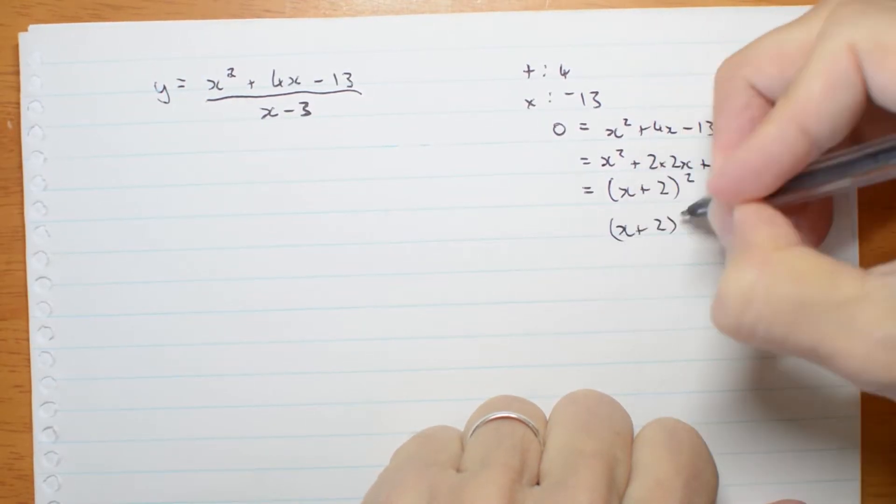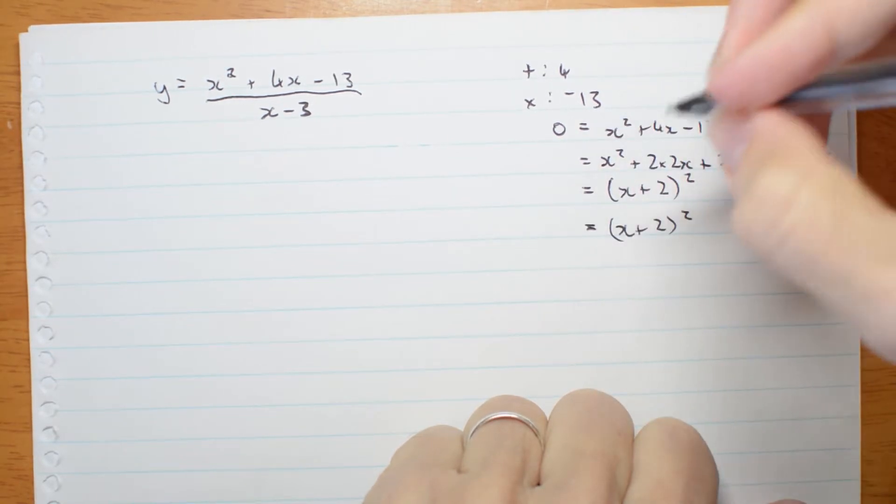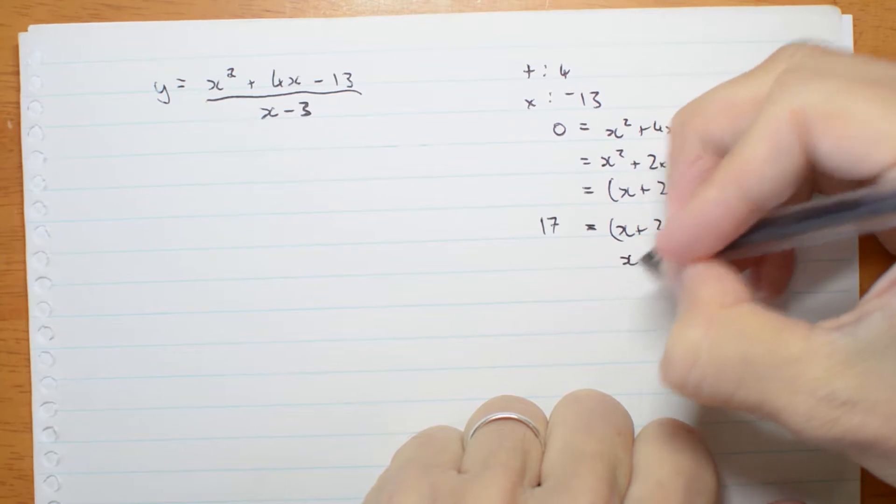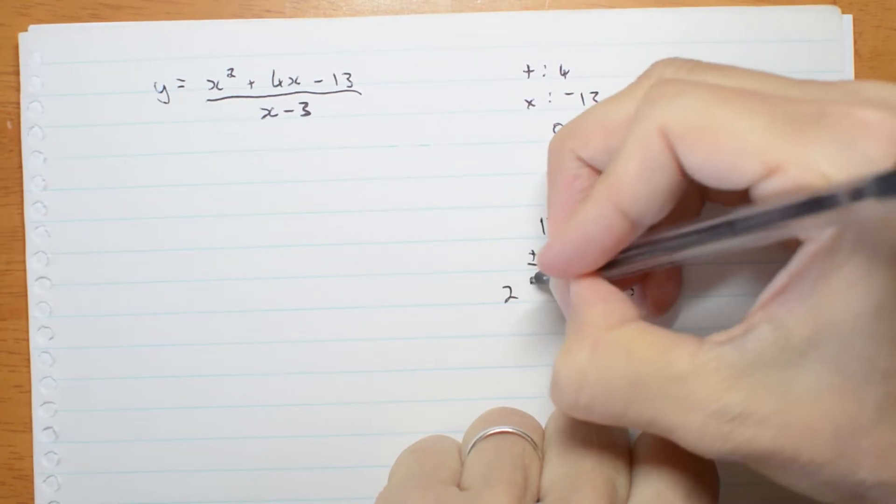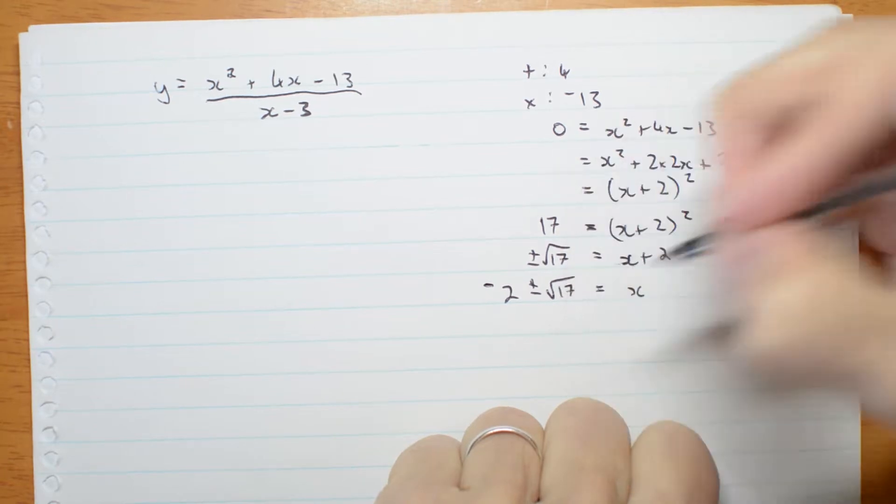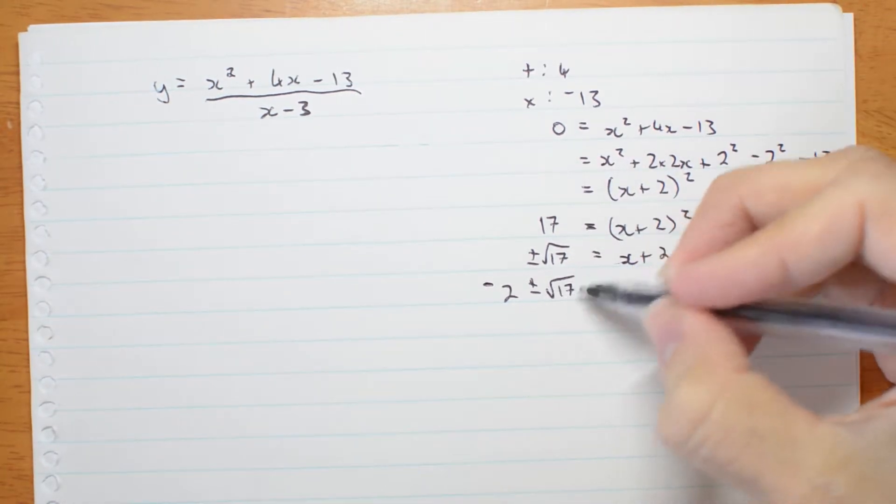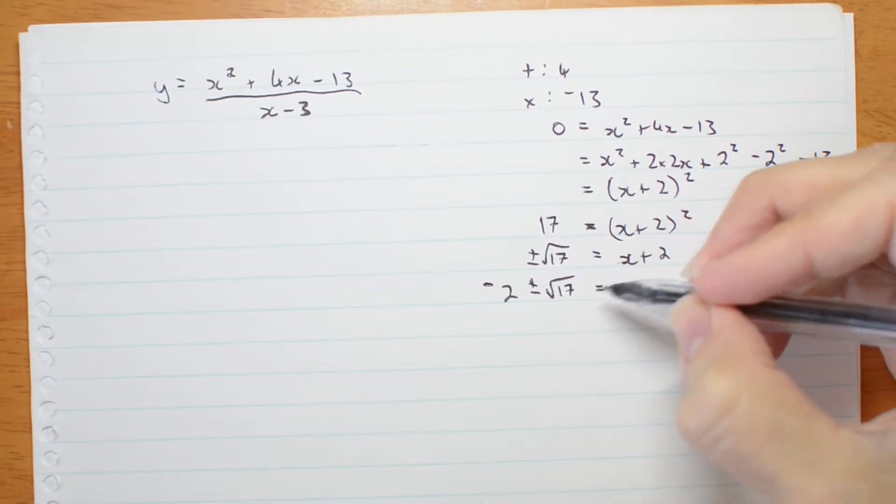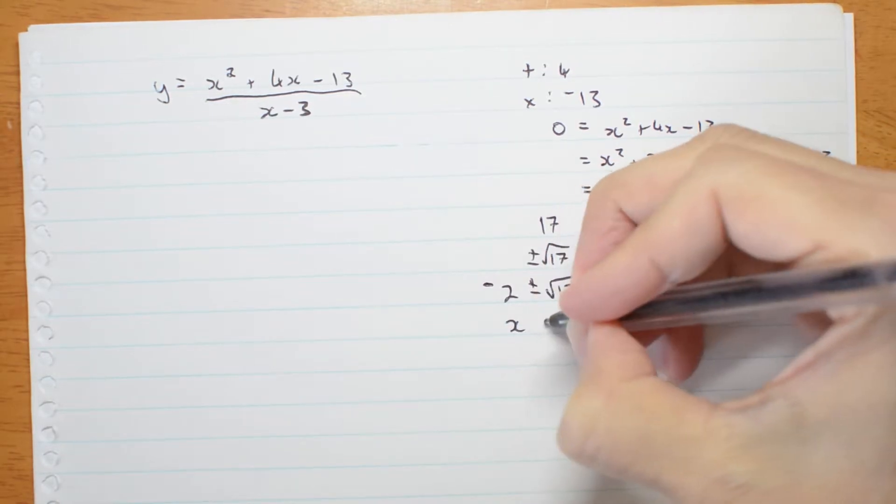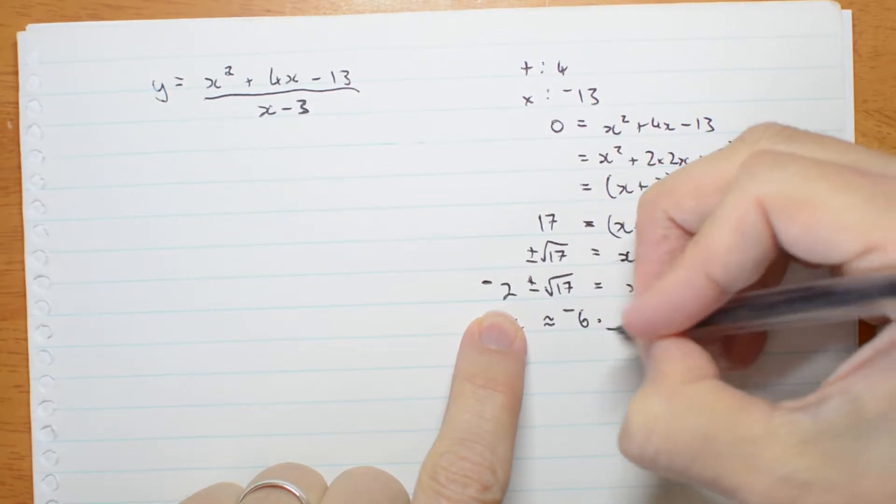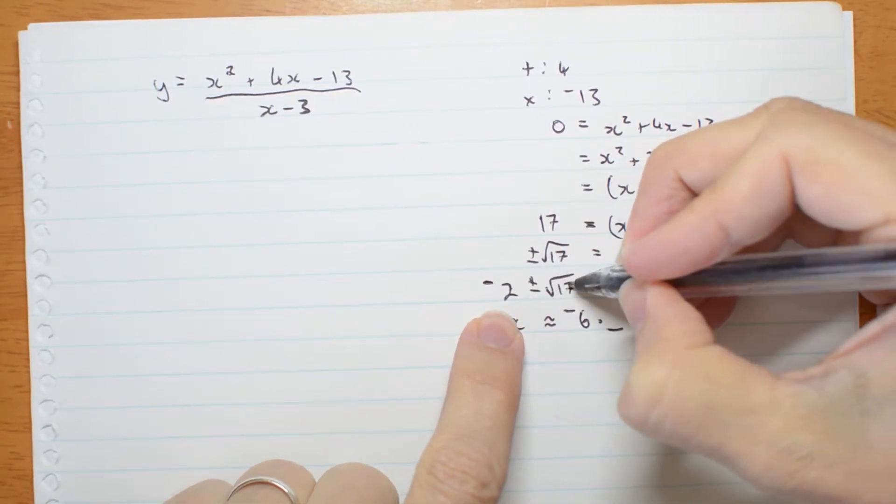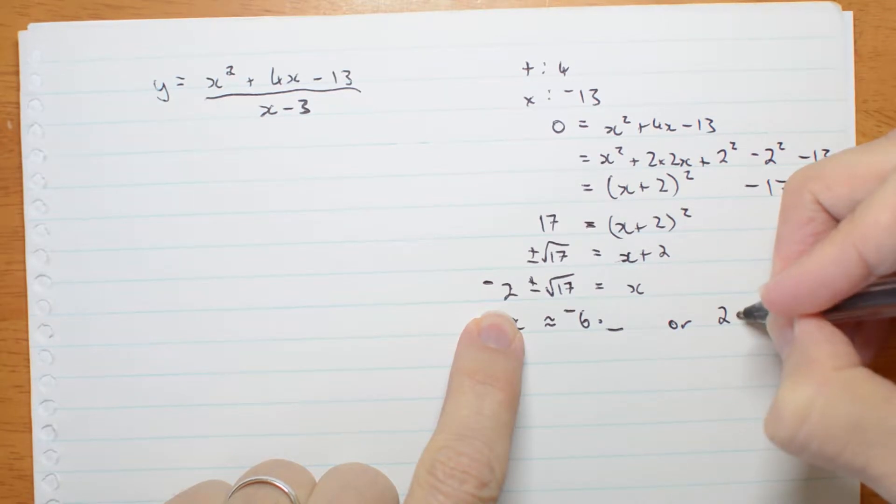So x plus 2 is plus or minus root 17 and x is 2, no sorry, negative 2 plus or minus root 17. Now root 17 is just a little bit bigger than 4. Root 16, root 25 would be 4 and then 5 so this is just a bit more than 4. So that means x is approximately negative 2 take away 4 and a bit, is negative 6 and a little bit, or negative 2 plus 4 and a bit is positive 2 point a little something.